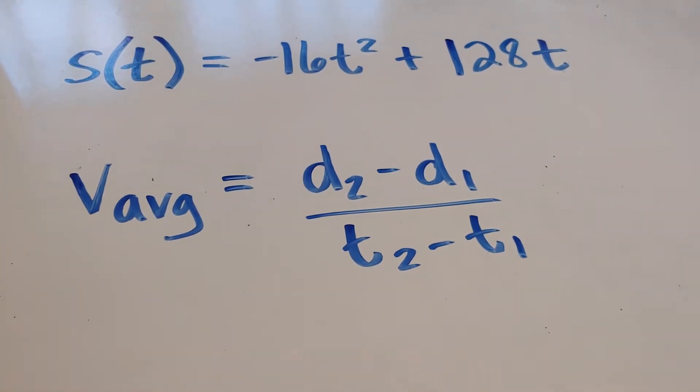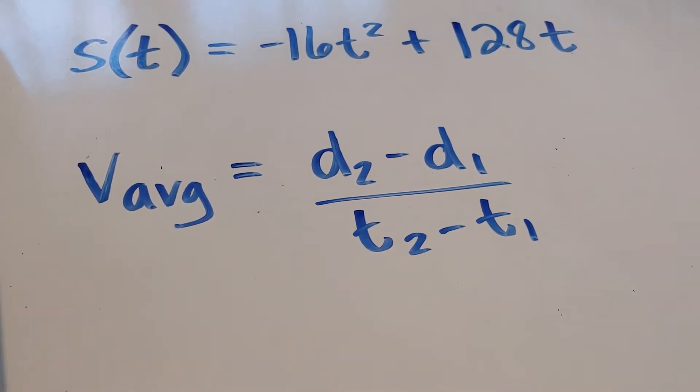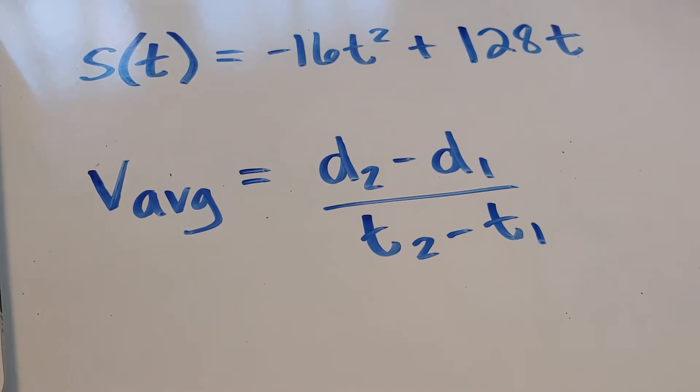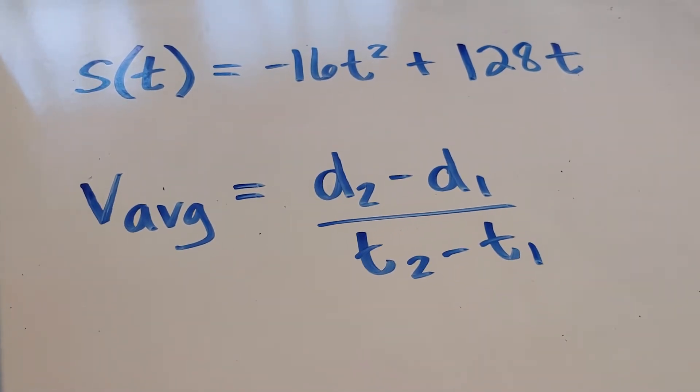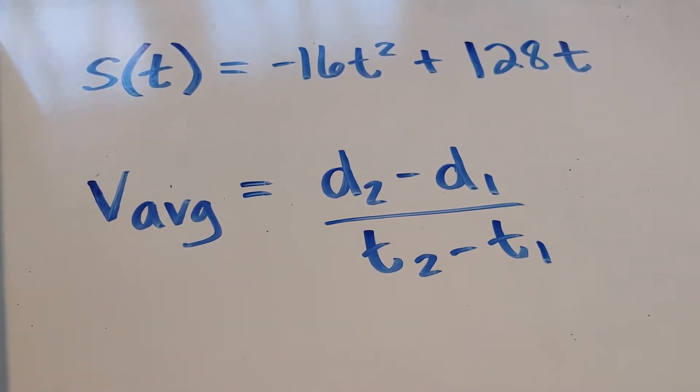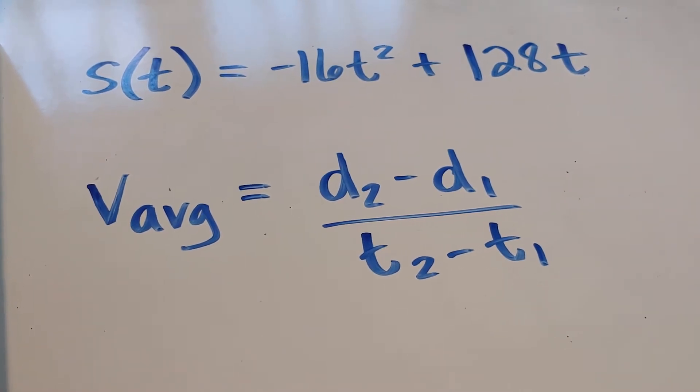In this video, we want to figure out how to find the average velocity for a function. You can see that this function is slightly different than the one in our notes, because I figured I'd give you a second example.